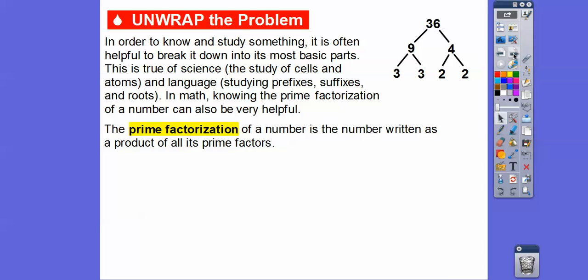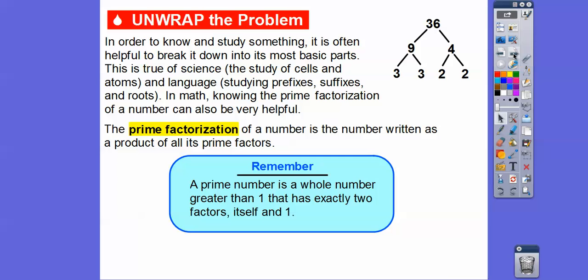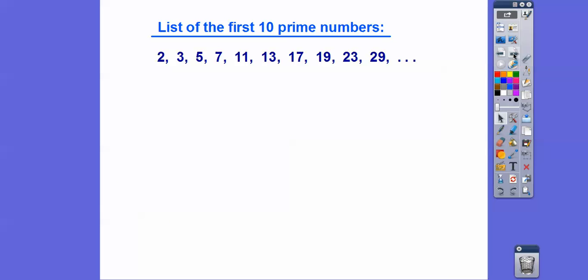In fact, this lesson is really helpful — you'll use this much later in several of your other math classes. The prime factorization of a number is the number written as the product of all its prime factors. Remember, a prime number is a whole number greater than 1 that has exactly 2 factors: only itself and 1.